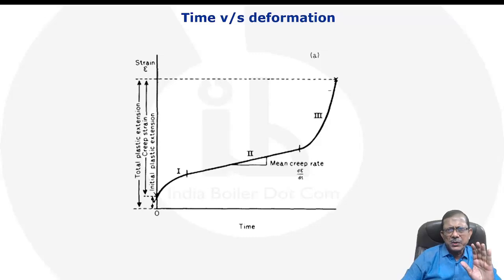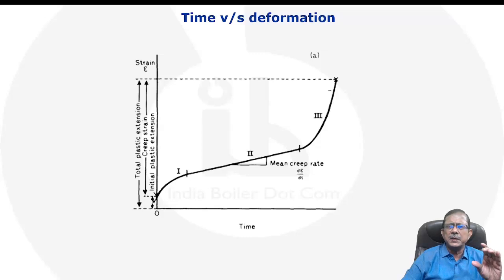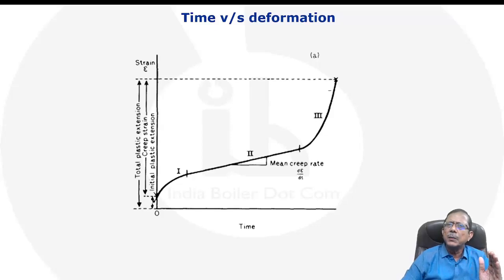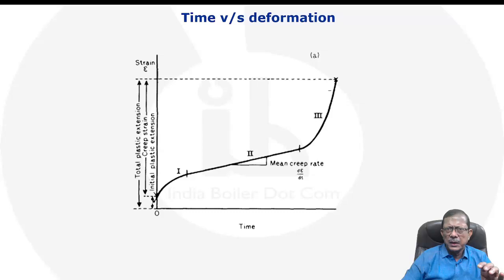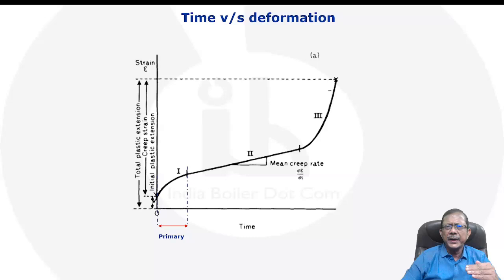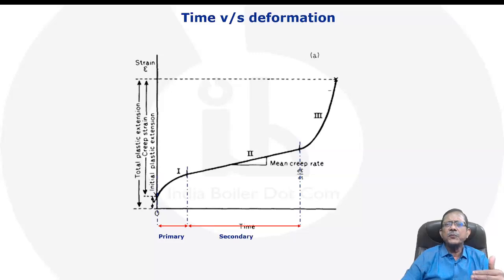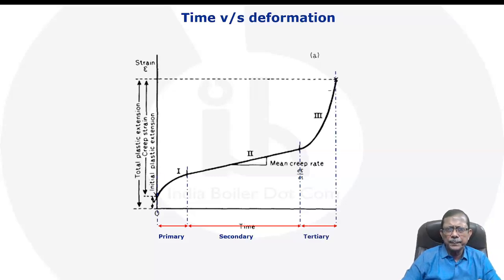Looking at the creep curve — a time versus deformation curve — initially there is rapid deformation in almost the elastic range, after which plastic deformation starts. Initially the rate of deformation against time is faster; this is called the transition zone or primary creep. After that it becomes much more steady for a long time — the secondary creep. After that, tertiary creep initiates, and then very fast it reaches the failure portion.